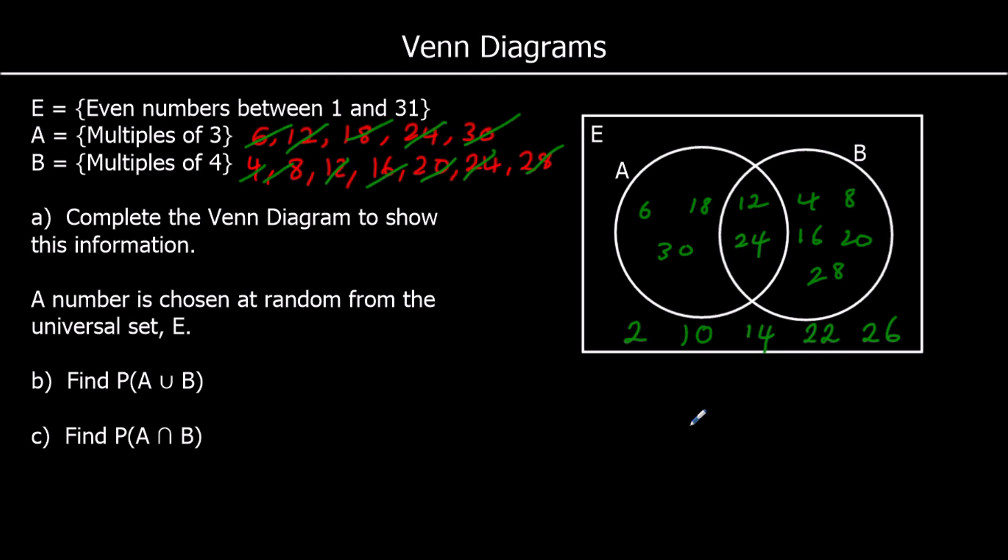And the questions. A number is chosen at random. So one of these numbers is picked at random. Find the probability it's in the union of A and B. So the union of A and B means anything in A or in B or in both. Anything inside the circles. So how many numbers are in the circles? 1, 2, 3, 4, 5, 6, 7, 8, 9, 10. Out of how many in total? 15. We don't have to simplify it. We can leave it as 10 fifteenths.